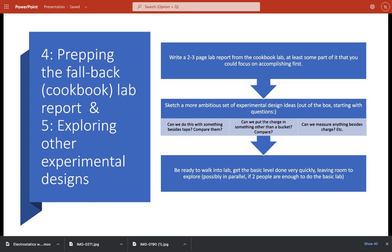Then you come into lab, and some people get right to work on doing that. Or if you happen to be able to multitask in parallel because you've got four members, you may break up into two and one if you've only got three, or two and two if you've got four, and then sketch a more ambitious set of experimental design ideas. You can do that in advance by asking questions. Can we do this with something besides tape? Or can we put charge in something other than a bucket? Or can we measure anything besides charge? These are questions you can ask in advance. You come in the lab, you see what's available, and then perhaps you parallel process. Some doing the basics, some seeing if they can set up something more interesting.